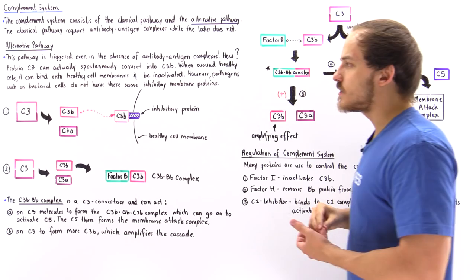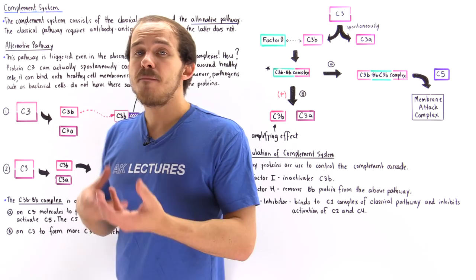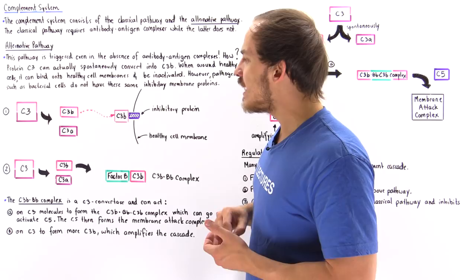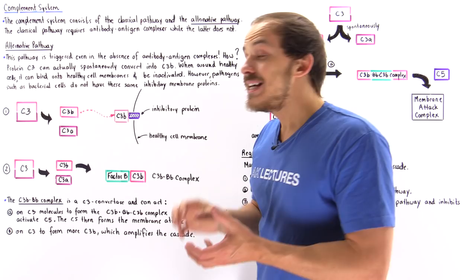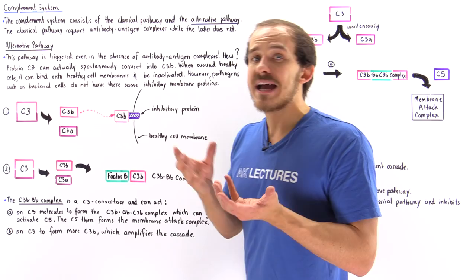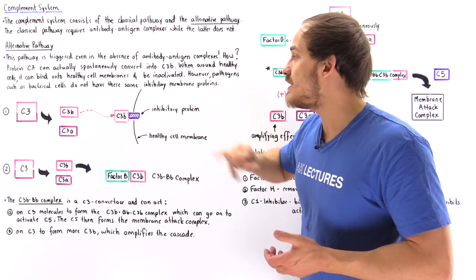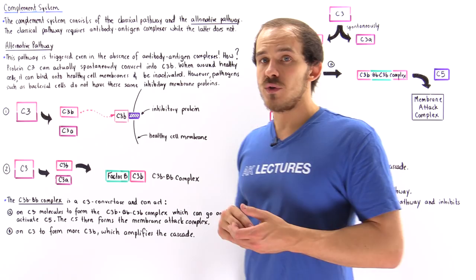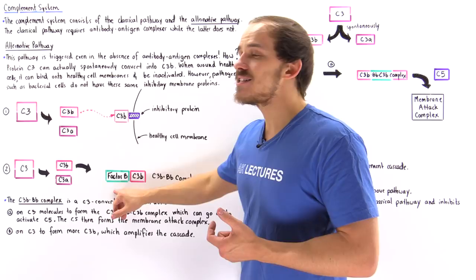Now, what happens if we do have some type of pathogen — for example, bacterial cells nearby this type of reaction? This is shown in diagram 2. Let's suppose we have this same spontaneous reaction that takes place to form C3b and C3a. Now, because we don't have any nearby healthy cells — we only have bacterial cells — those bacterial cells don't actually have any of these inhibitory proteins to deactivate the C3b molecules. Because of that, the C3b molecules go on and react with another protein known as factor B.